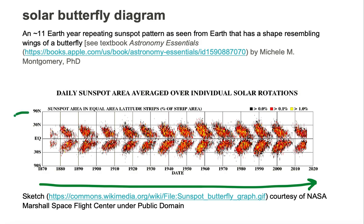I will draw an oval shape for the Sun because I don't have enough space to draw a circle. EQ represents the equator of the Sun. 90 degrees N represents the North Pole of the Sun and 90 degrees S represents the South Pole of the Sun.